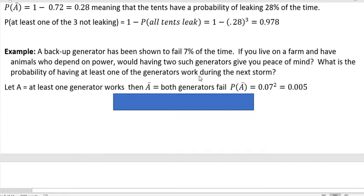So we're interested in when it would work. So what we're going to do is figure out the probability that neither one of them would work. So A is at least one generator works. And A prime, or the complement of A, is both generators fail.